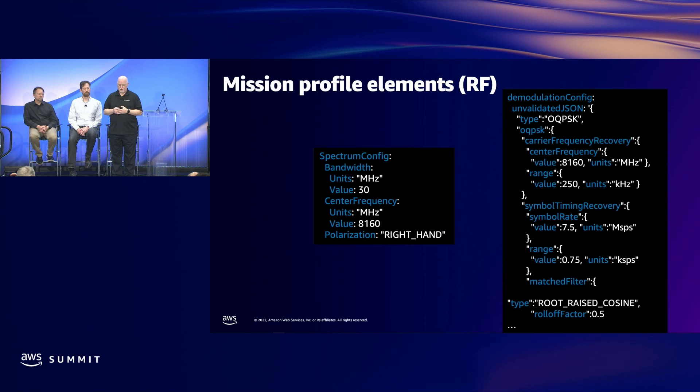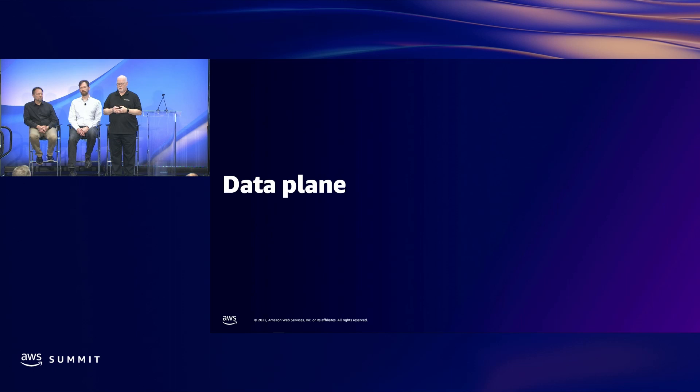Here are some of the details in the mission profile. The RF parameters are shown on the left side and the demodulation and decoding settings are shown on the right. These are segments of a mission profile for use with one of the broadcast satellites mentioned earlier. Now to get into the data plane, I'd like to turn it over to Nate McGuirt.